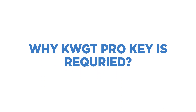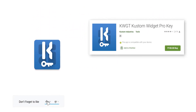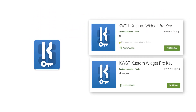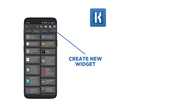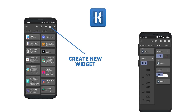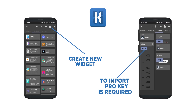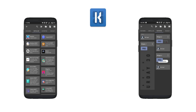Before we start with widgetpacks, let's understand why a KWGT Pro key is required. KWGT Pro key is available on the Play Store for Rs.150 or $4.49, and other widgetpacks on the Play Store require a pro key to use them. The KWGT free app allows you to create amazing setups on your own, but if you want to import any other widgets, then you will need a pro key.